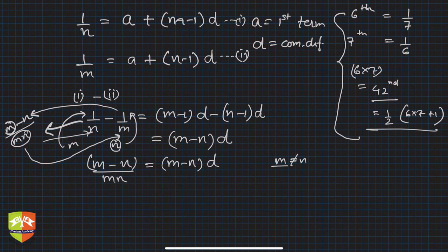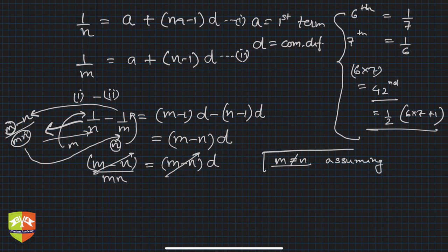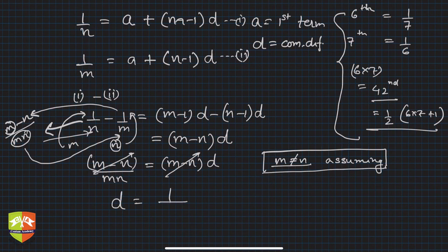Assuming m ≠ n — which is a fair assumption since the mth term is 1/n and the nth term is 1/m — we can cancel (m − n) from both sides. Hence, d = 1/mn.